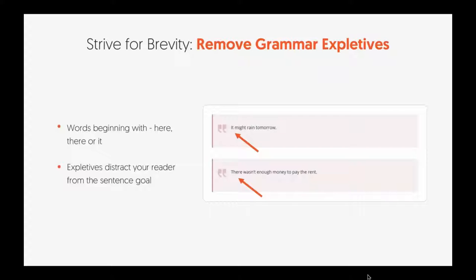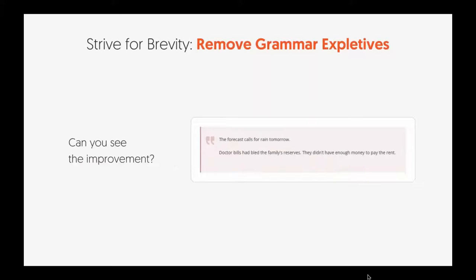You also want to remove vague words like 'here,' 'there,' or 'it,' and any expletives. A good example: 'There wasn't enough money to pay rent' — it's not descriptive enough. A better version: 'It may rain tomorrow. There wasn't enough money to pay the rent' becomes 'Forecast calls for rain tomorrow. Doctor bills have bled the family's reserves — they didn't have enough money to pay the rent.' You see how that's way better?